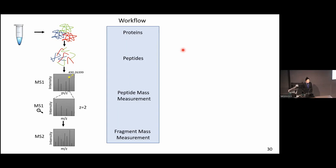I'm showing you this workflow again since you already have seen it, because I want you to keep in mind that we have two branches in MaxQuant. One has to do with the theoretical spectra — the theoretical branch — and one is the experimental branch that has to do with the experimental spectrum. We already saw the experimental branch, and now we're going to see the theoretical branch.